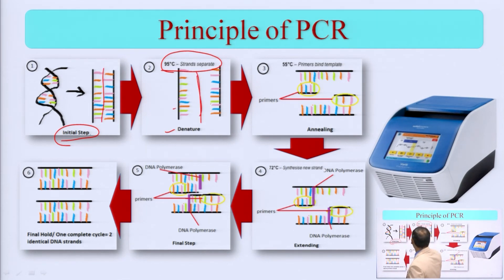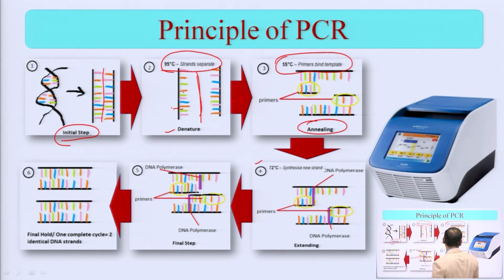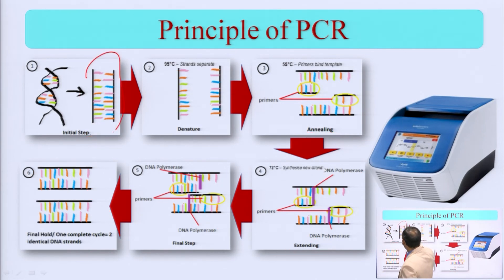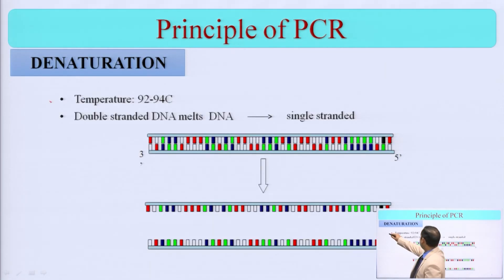You can see the separation has happened. After that, primers are actually going to be added. Here, we reduce the temperature to 55 degrees Celsius — primers are added, and we call this process annealing. Then we again increase the temperature, and DNA polymerase extends the strand — another copy gets generated. From one we started: it was broken into two parts, primers were added, polymerase enzyme helped to make a new strand, and due to that you are getting another copy.